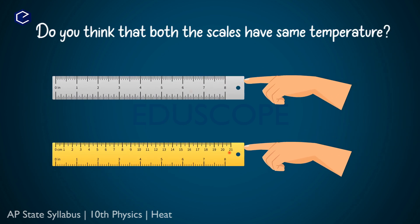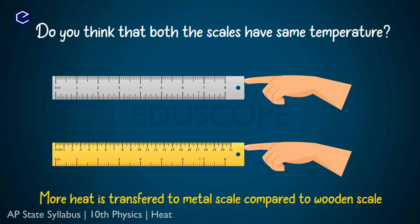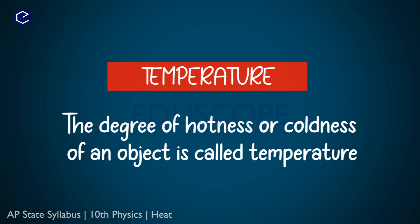We have two scales from the fridge: a metal scale and a wooden scale. When we touch both scales, do we feel the same temperature? No. The degree of coldness of the metal scale is more than the degree of coldness of the wooden scale. The degree of hotness or coldness is the temperature.